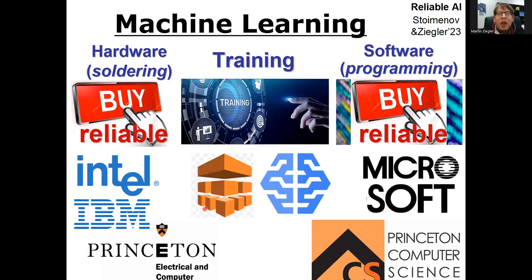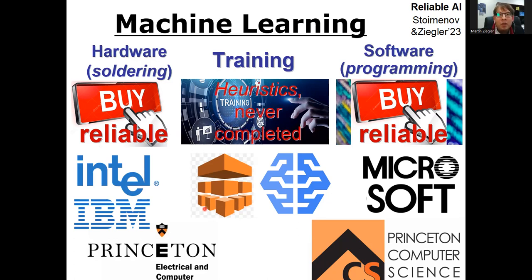These are also reflected commercially with companies like Amazon or Google. Now, how can we even talk about reliability when we want to buy some trained or pre-trained model? Because training is a never-ending process,